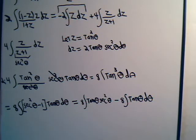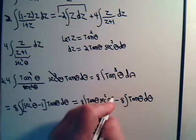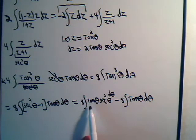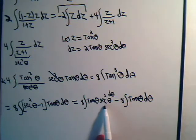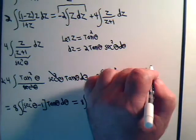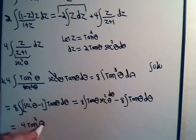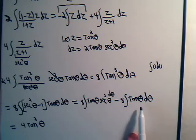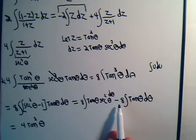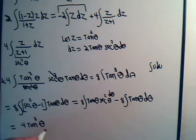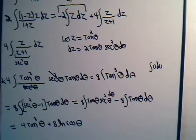This will be pretty easy to handle. The integral of tangent theta dθ is minus the natural log of the cosine of theta. And here, if we call u equal secant theta, then du is secant theta dθ, so the first part is just the integral of u du, which is one half u squared. So this will be equal to 4 times tangent squared theta, and the minus sign on the natural log makes it plus 8 times the natural log of the cosine of theta.